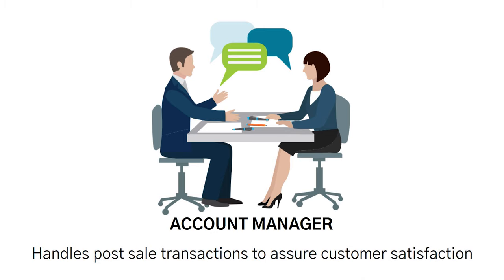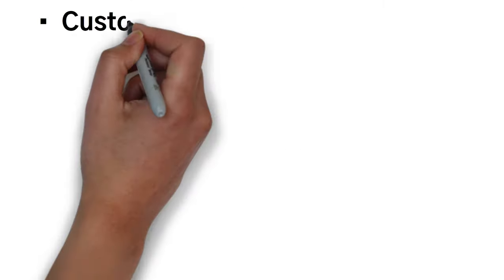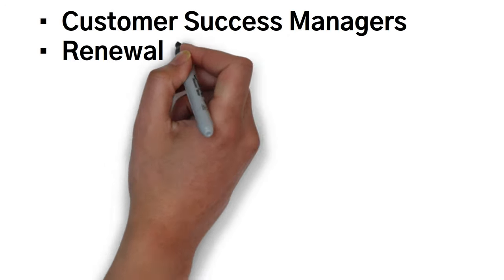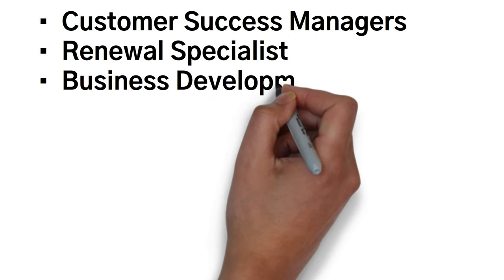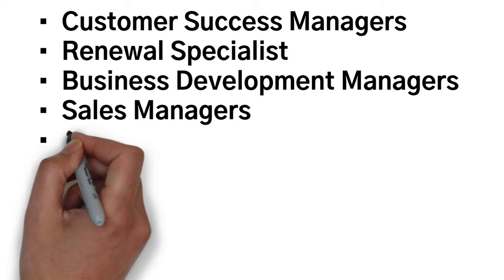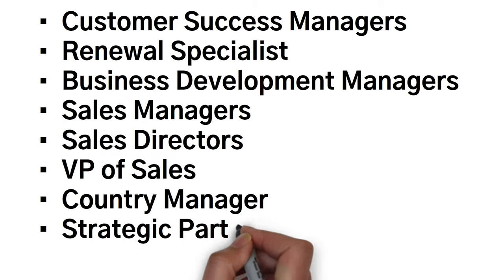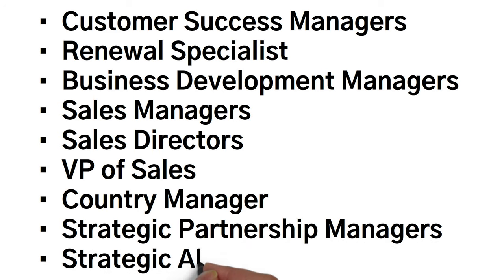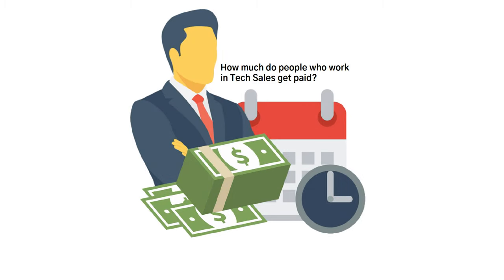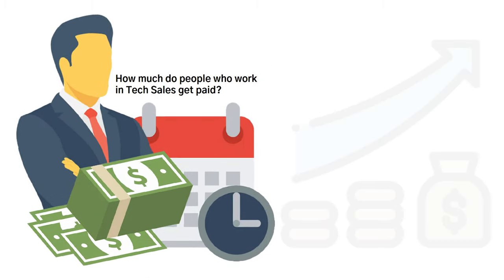And down the line, there would be even yet other positions. For instance, customer success managers, renewal specialists, business development managers, sales managers, sales directors, VP of sales, country managers, strategic partnership managers, and strategic alliance managers. In some of these higher level positions, you can literally make over a million dollars a year, and in rare cases over 10 million.